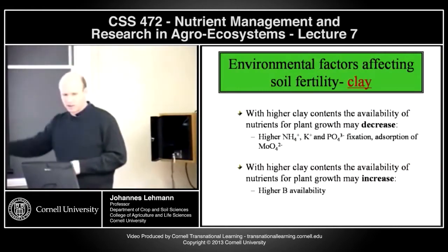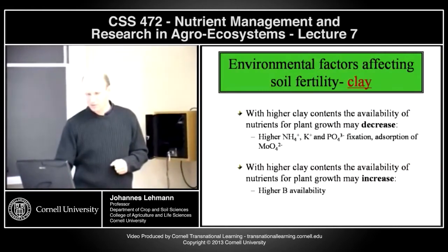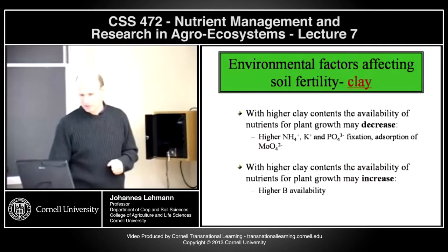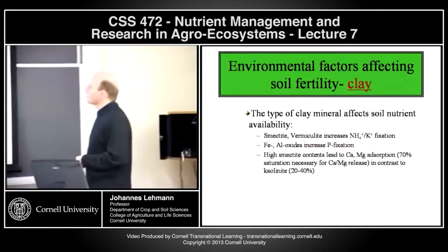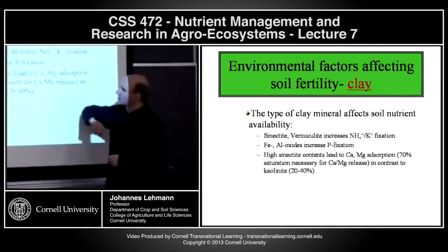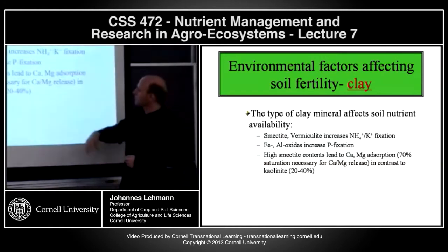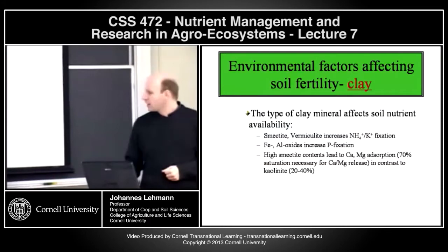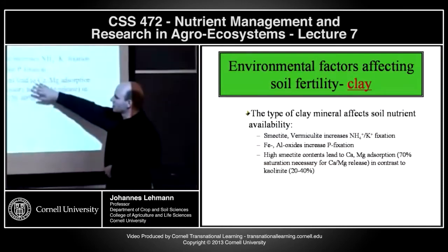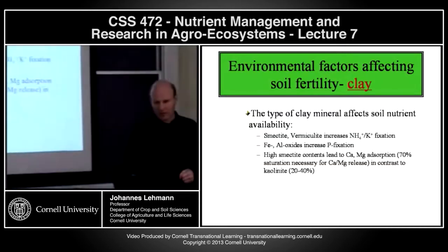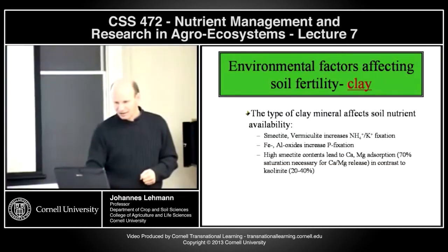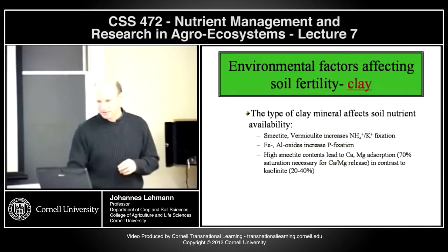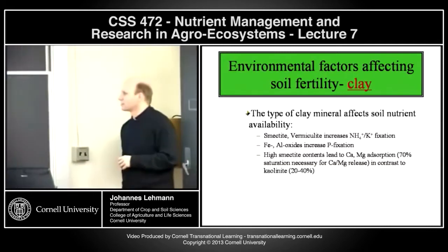But availability can also increase for other nutrients — usually micronutrients — with the exception of molybdenum, which is negatively charged. As a summary: smectites and vermiculites increase potassium and ammonium fixation; iron and aluminum increase phosphorus fixation; high smectite contents lead to calcium and magnesium adsorption. There's a lot going on, and you should really look at the details once you have a case study and problem set.